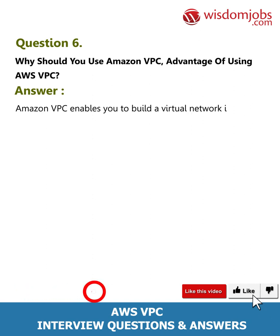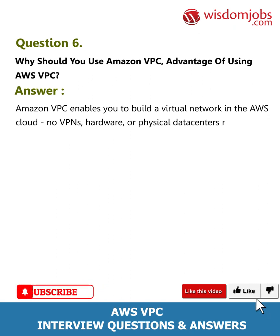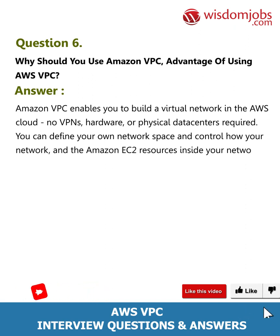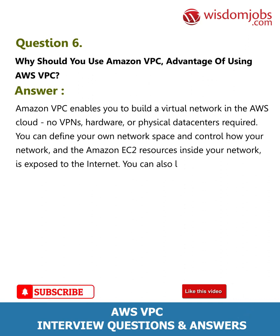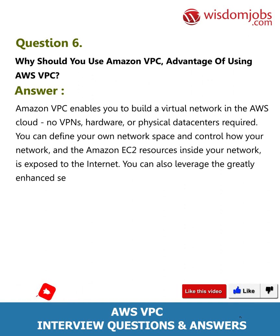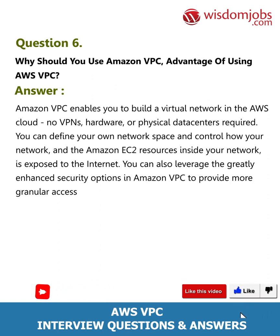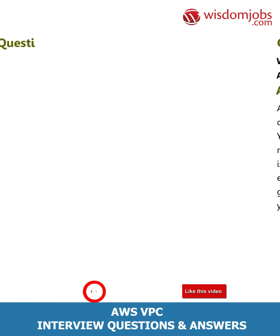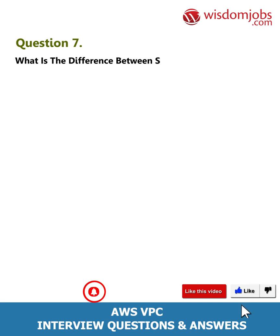Question 6: Why should you use Amazon VPC? Advantages of using AWS VPC: Amazon VPC enables you to build a virtual network in the AWS cloud — no VPNs, hardware, or physical data centers required. You can define your own network space and control how your network and the Amazon EC2 resources inside your network are exposed to the internet. You can also leverage the greatly enhanced security options in Amazon VPC to provide more granular access both to and from the Amazon EC2 instances in your virtual network.